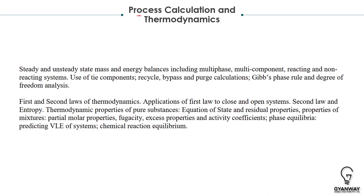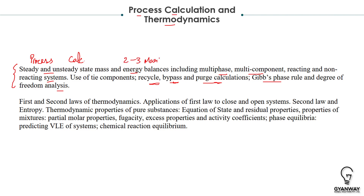The first subject is Process Calculations. The topics include steady and unsteady state mass and energy balances, multi-phase systems, multi-component reacting and non-reacting systems, recycle problems, bypass problems, pulse calculations, Gibbs phase rule, and degree of freedom analysis. Questions on recycle, bypass, and pulse calculations are always asked for two marks. You can expect around two to three marks from this subject.